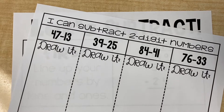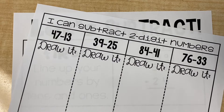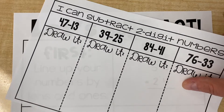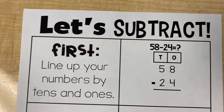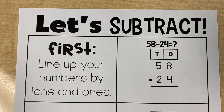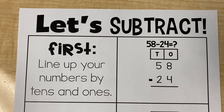Hey friends, it's Ms. Humphrey here, and today we are going to be talking about subtracting two-digit numbers without using regrouping. Today we're going to be talking about two different ways to do this. The first way I'm going to show you is by lining your numbers up using a place value chart. We've talked about this before, so let's go ahead and take a look at what we would do when we are subtracting using a place value chart.